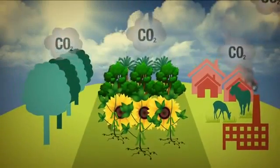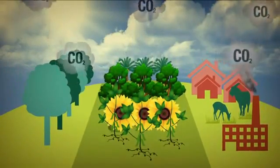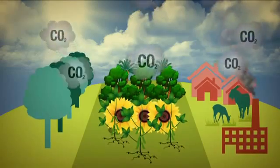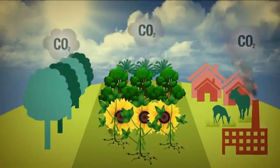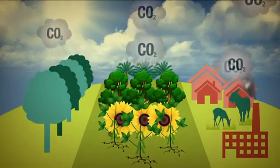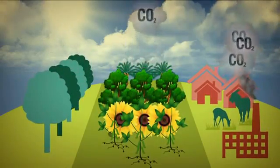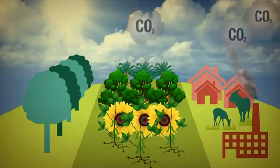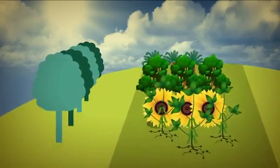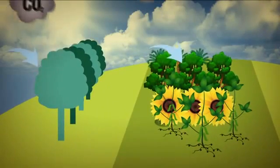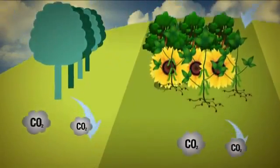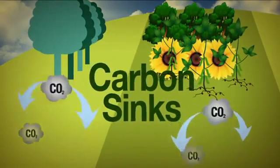Simply put, it is about gases in our air. It is about carbon dioxide gas. Our activities on land, our plantations and our forests are all related in emitting and removing carbon. Trees and plants absorb carbon dioxide. As forests are able to remove carbon, they are called carbon sinks.